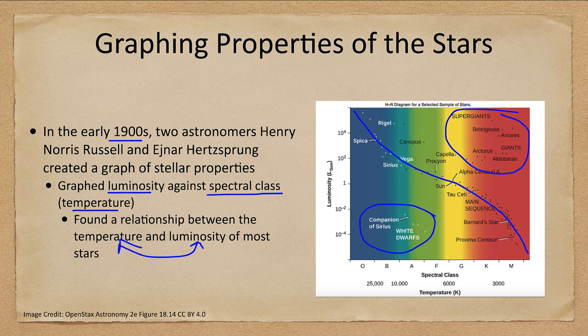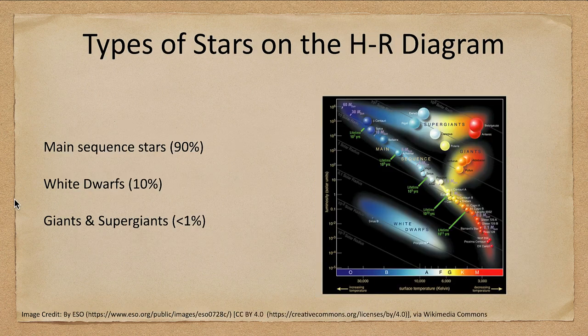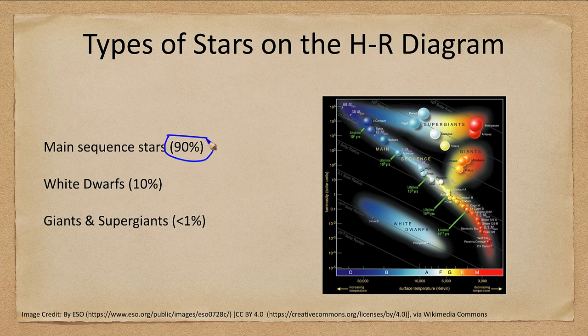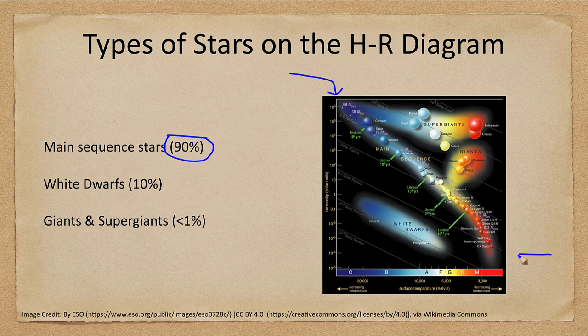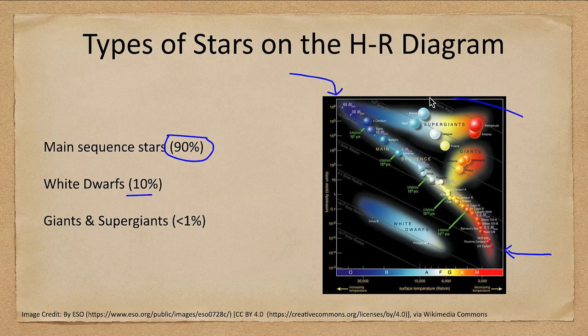The vast majority, 90% of the stars, were found to lie on the main sequence that starts in the upper left and runs down to the lower right. White dwarf stars accounted for about 10% of stars, and the giants and supergiants, some of the more prominent stars in the night sky, were less than 1% of the stars.